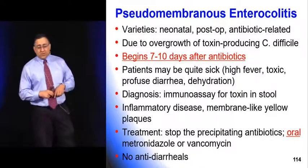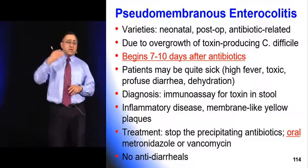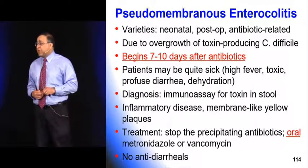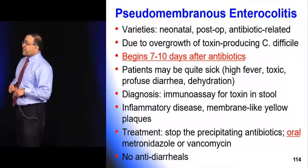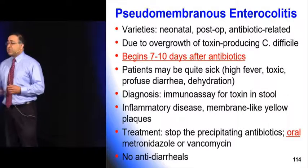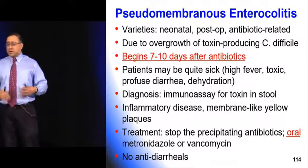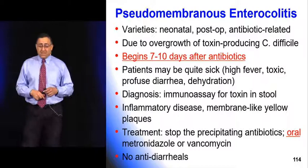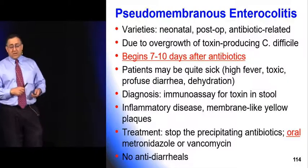Pseudomembranous colitis — C. diff — is associated with chronic antibiotic use that changes gut flora, causing profuse watery diarrhea, sometimes bloody. Key point: you generally need to be on antibiotics for a minimum of 7–10 days before you're at risk, and antibiotic use can be from a month or two ago — it doesn't have to be current. Three days on an antibiotic is not C. diff. Treatment: oral metronidazole or oral vancomycin; avoid anti-diarrheal agents.